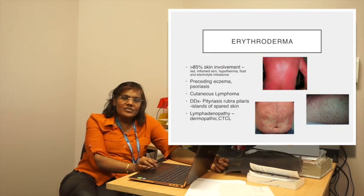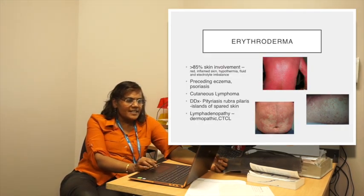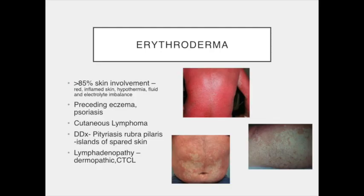Then comes the red man syndrome, called erythroderma, which presents with fully red skin. This condition is seen when 85% of the skin is inflamed. It is mostly based on dermatological skin diseases which flare up suddenly — most commonly eczema, psoriasis, and sometimes cutaneous lymphomas being diagnosed for the first time. There is also a differential diagnosis called pityriasis rubra pilaris, a follicular type of skin rash, with the differentiating feature being some spared areas not involved. The most important sign here is to examine the lymph nodes, which would direct a clue towards diagnosing cutaneous lymphoma.